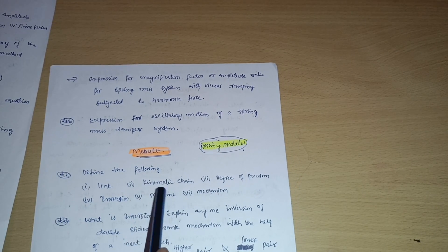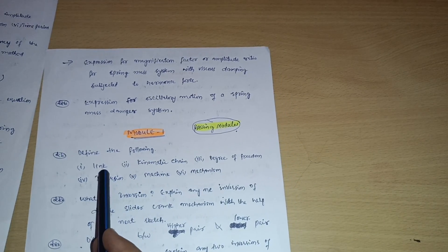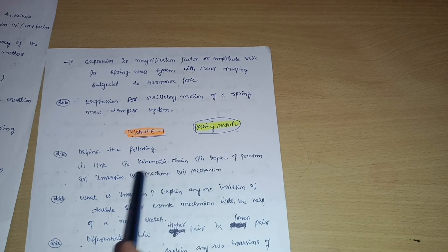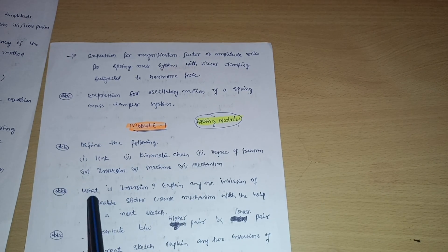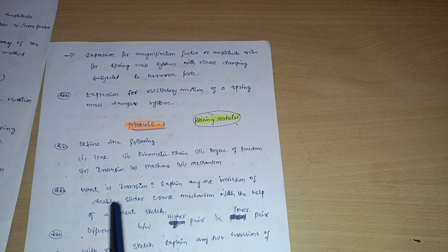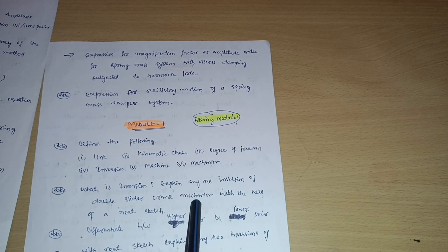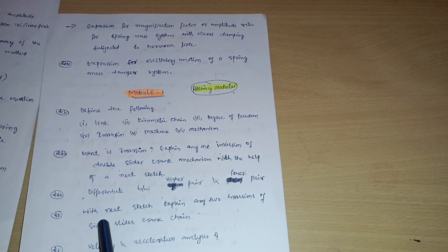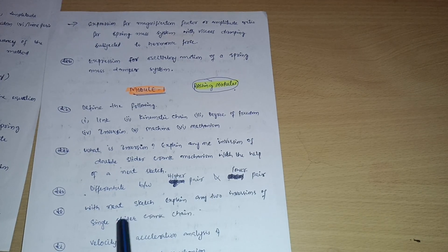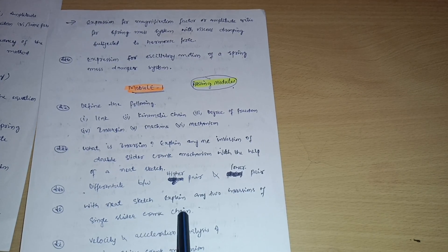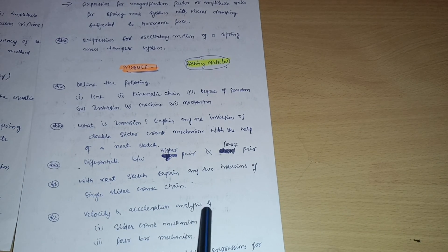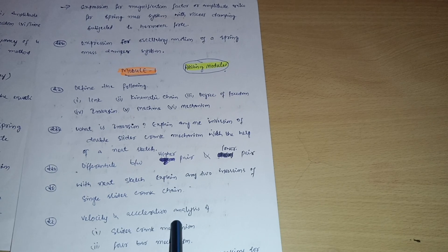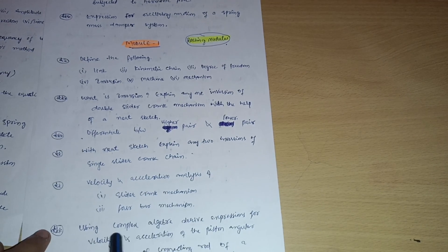The next passing module is Module 1, where you have to go through some theoretical concepts like: define link, kinematic chain, degree of freedom, inversion, machine, and mechanism; explain any one inversion of a double slider crank mechanism with a neat sketch; differentiate between higher pair and lower pair; explain any two inversions of a single slider crank chain. Also cover velocity and acceleration analysis of a slider crank mechanism and four-bar mechanism — there are some problems for those comfortable with the numerical part.